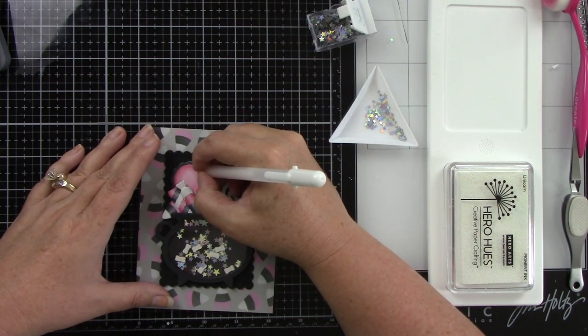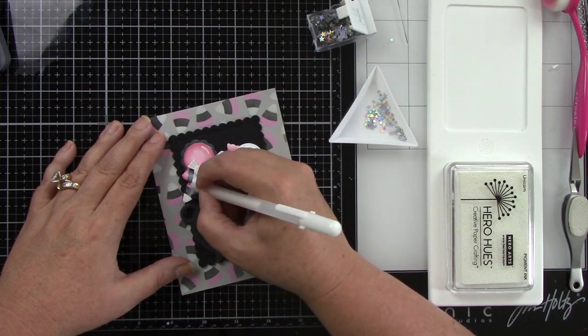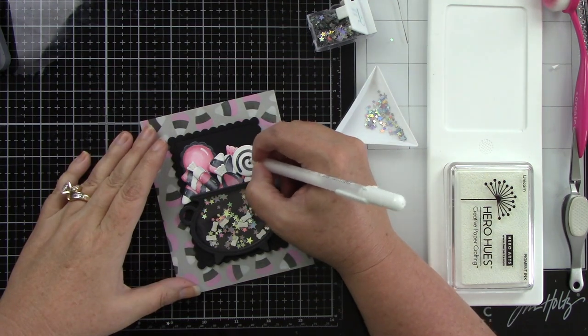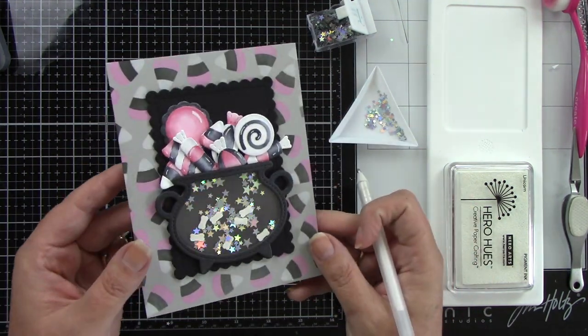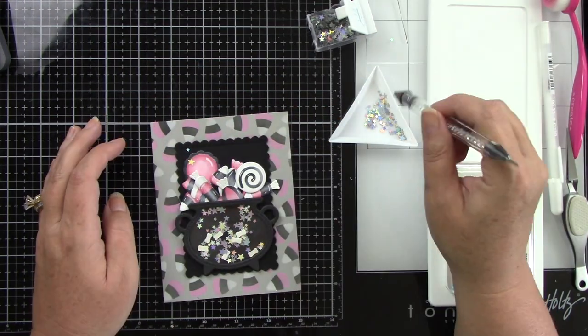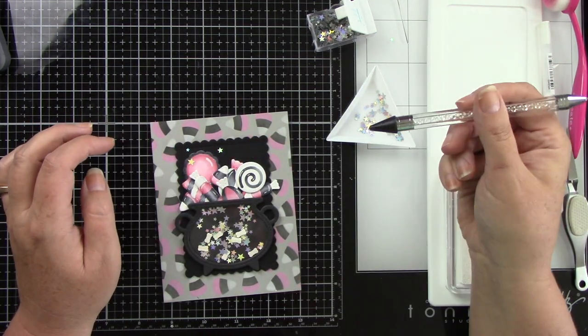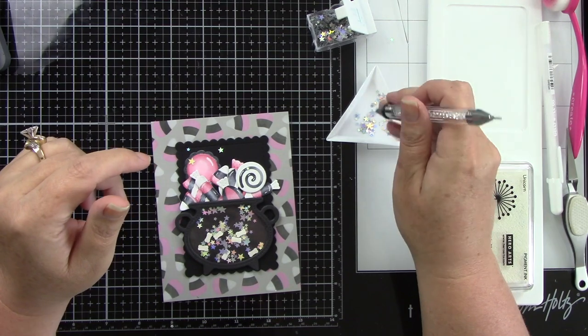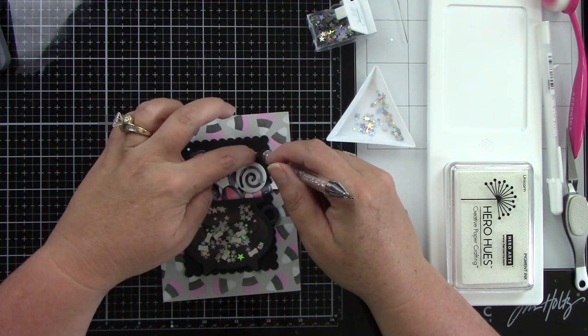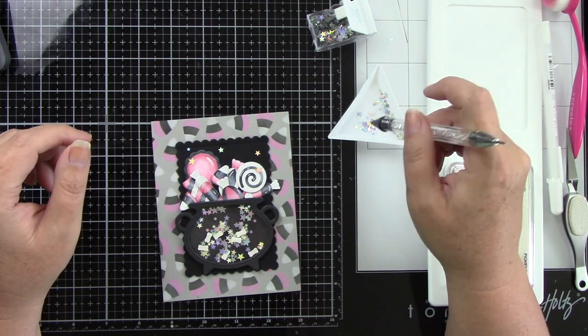Time for some white gel pen highlights. You guys know I love this. It adds so much detail to your images and makes them look shiny. I'm just going to add a few of those details around. Then I decided to bring in more of those Trinity Stamps Oh My Stars just to the background and on top of the candy and a couple on the cauldron. I thought that kind of brightened up the background and brought some of the shaker bits up and out.